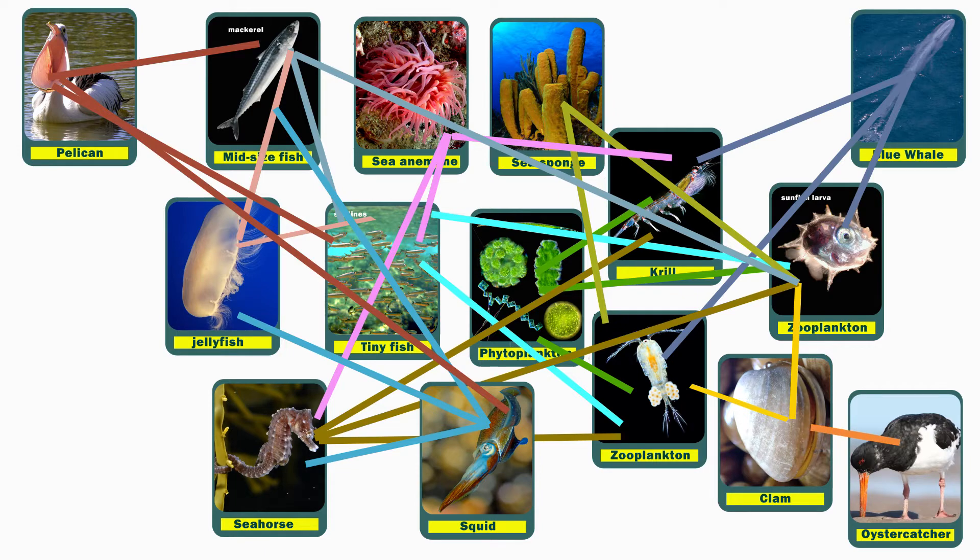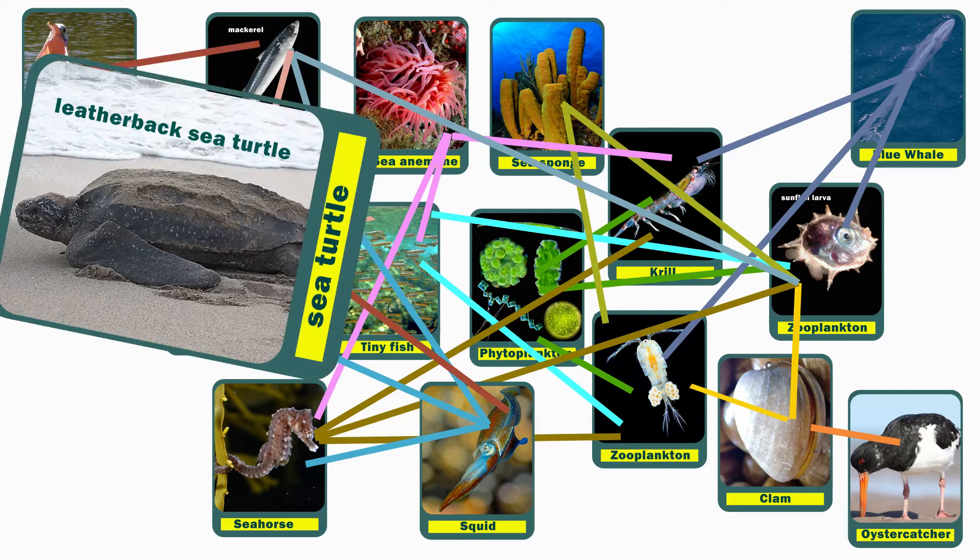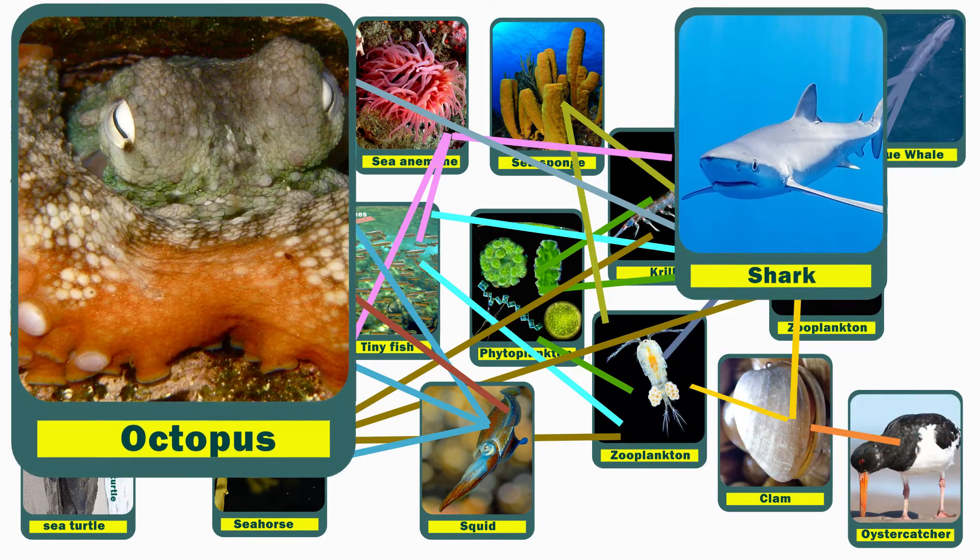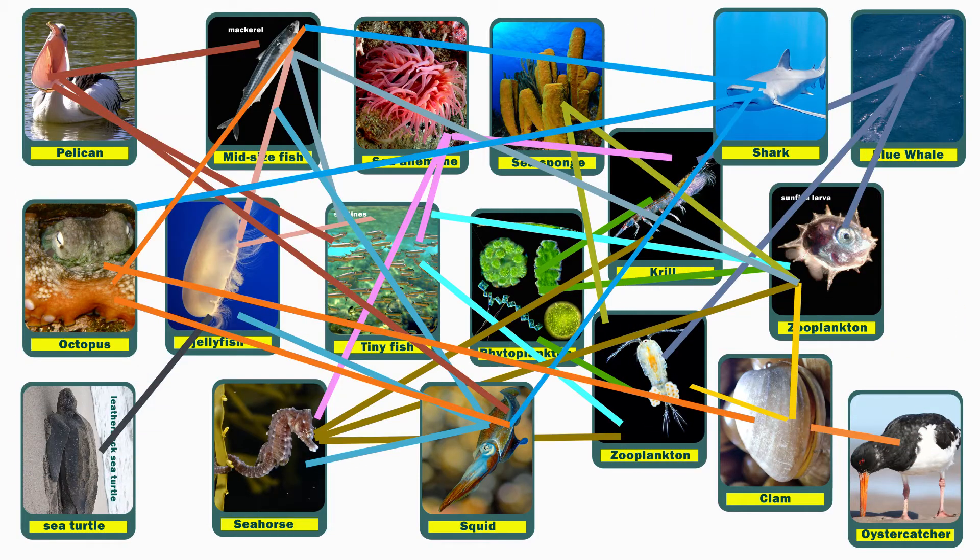Now those creatures have predators too, like sea turtles and sharks and octopuses. When we draw in all these lines, we see that we have a food web, not a chain, and it tells a much more complete story of how living things depend upon each other for food.